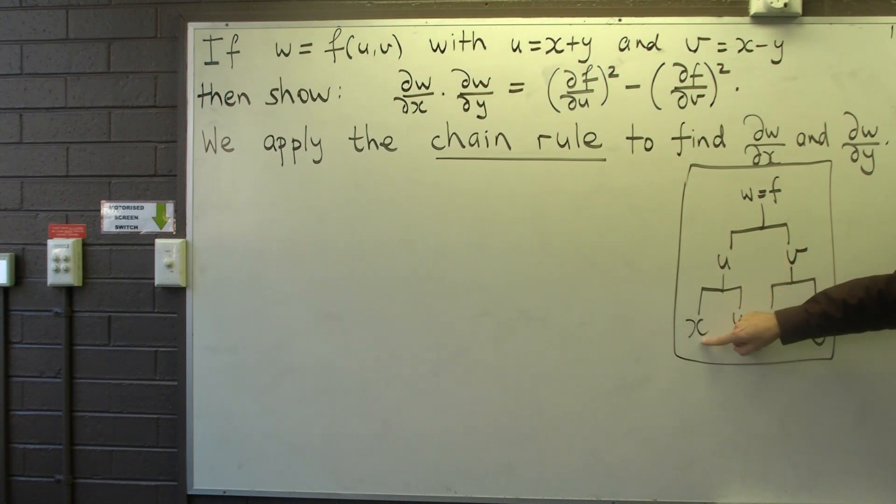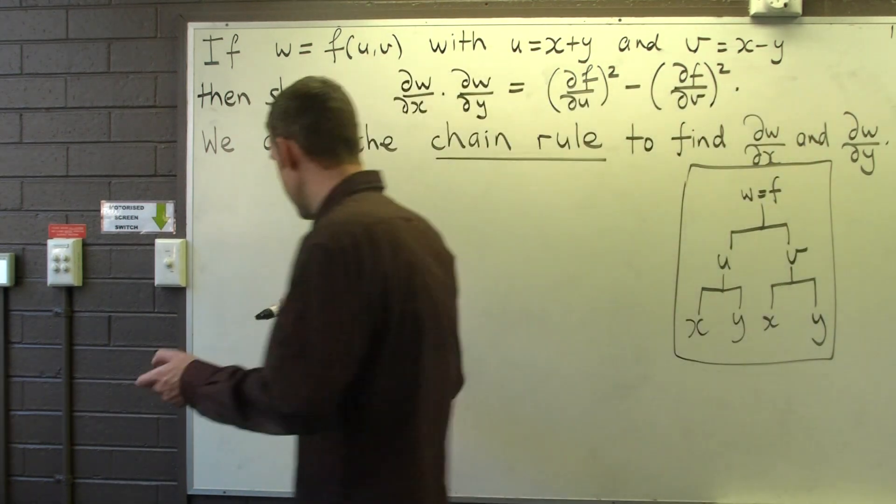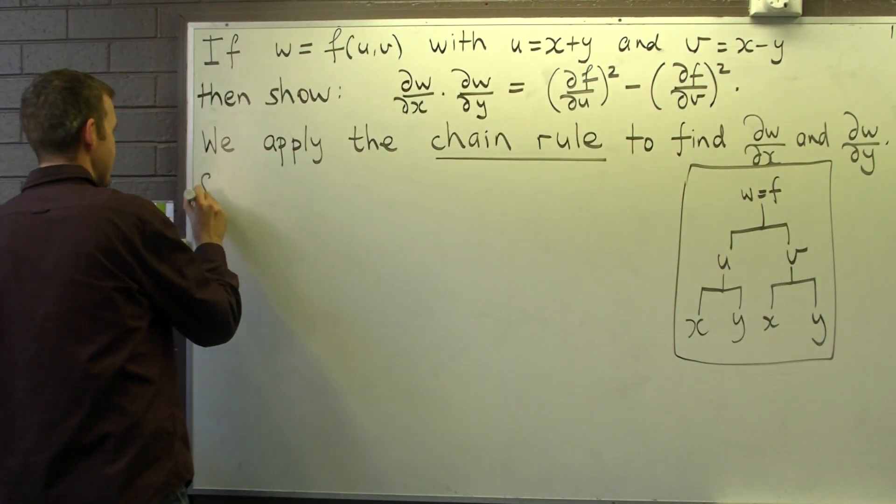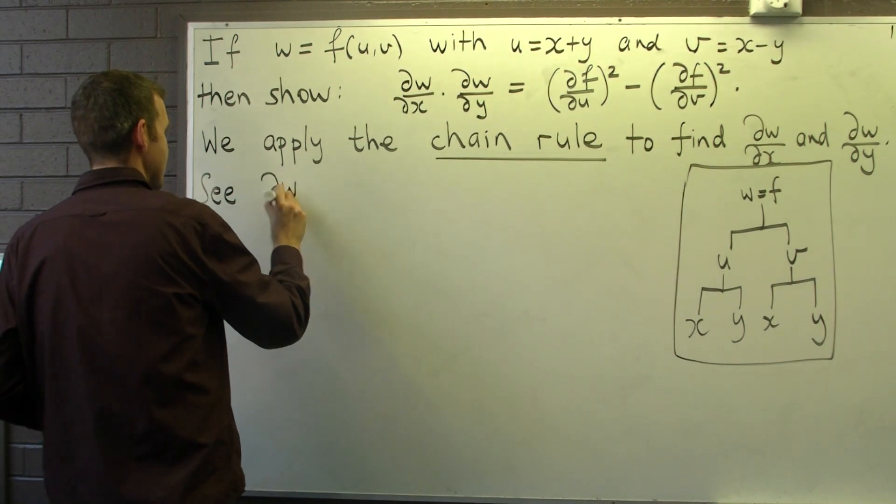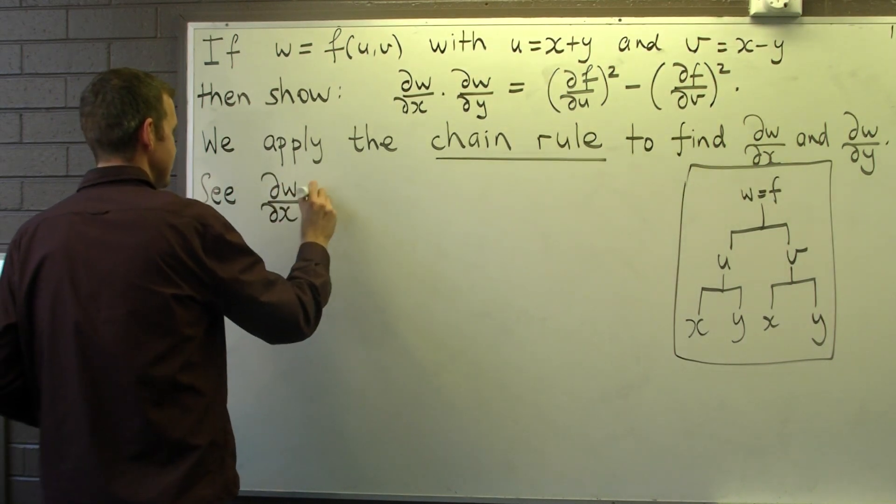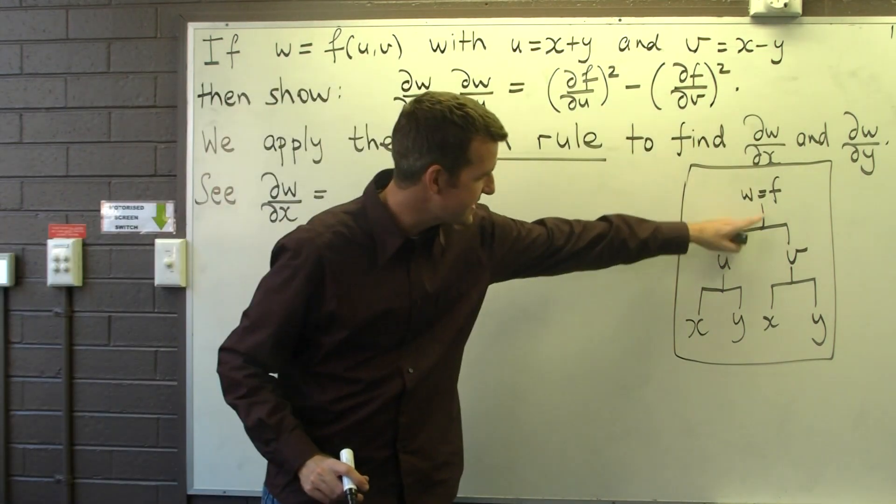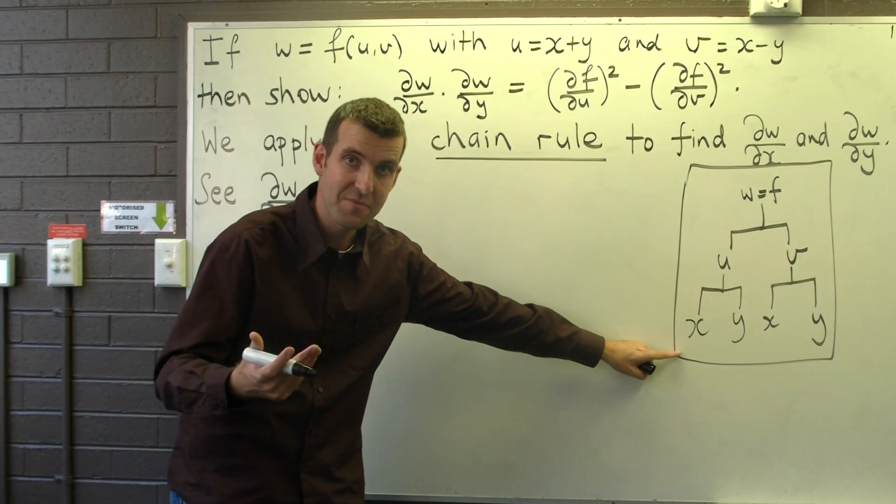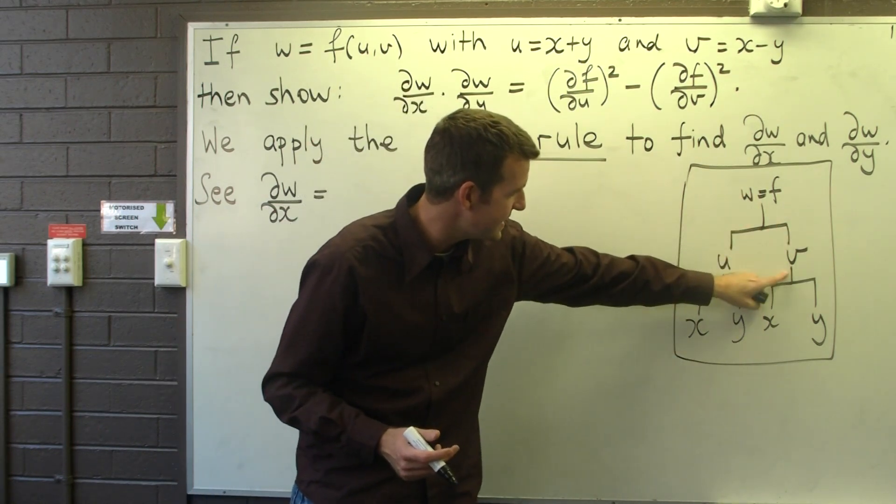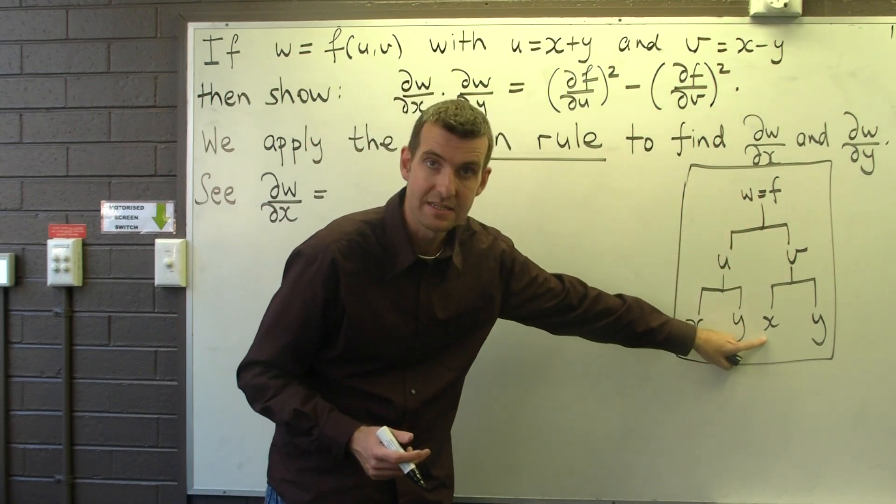And then there's another path to go down, so let's use this. So ∂w/∂x is ∂f/∂u times ∂u/∂x plus the other branch ∂f/∂v times ∂v/∂x.